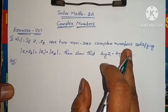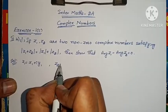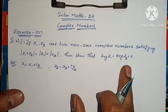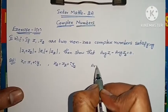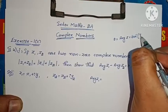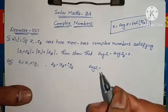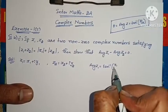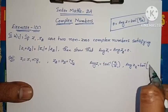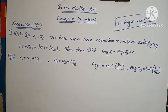So Z1 and Z2 are two complex numbers. Let Z1 equals X1 plus iY1, and Z2 equals X2 plus iY2. We need to show that arg Z1 minus arg Z2 equals 0. Now, arg Z = tan inverse of Y by X. So arg Z1 = tan inverse of Y1 by X1, and arg Z2 = tan inverse of Y2 by X2.